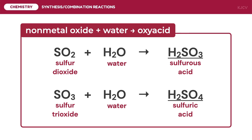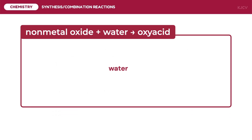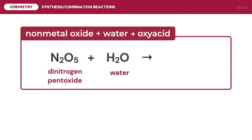For another example, we predict the product of nitrogen pentoxide reacting with water. Oxygen has an oxidation number of negative 2 for a subtotal of negative 10. To achieve a zero total, nitrogen must account for positive 10, but since there are two nitrogen atoms, the oxidation number of nitrogen is positive 5.